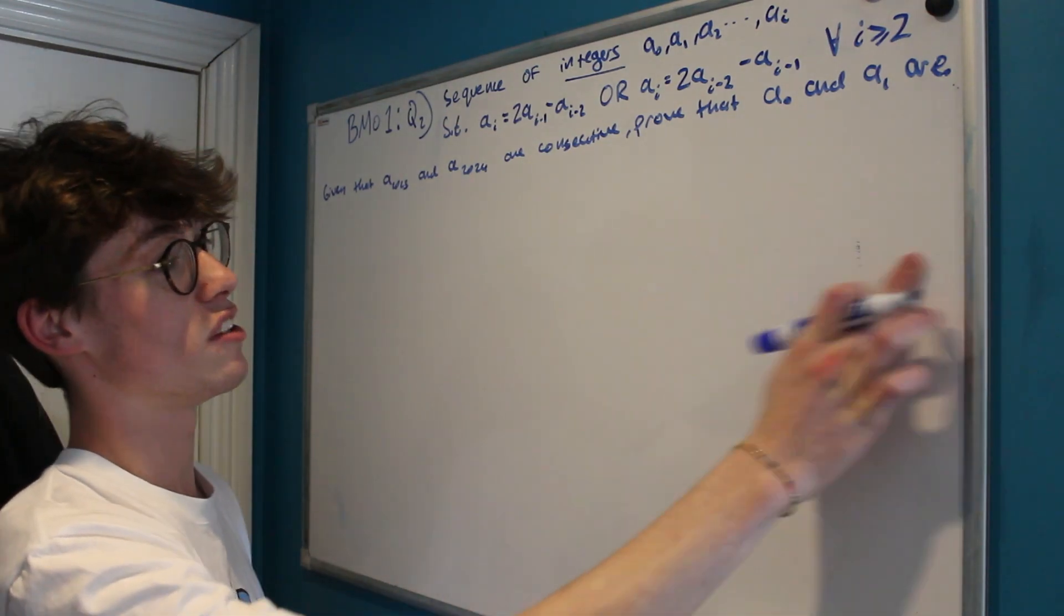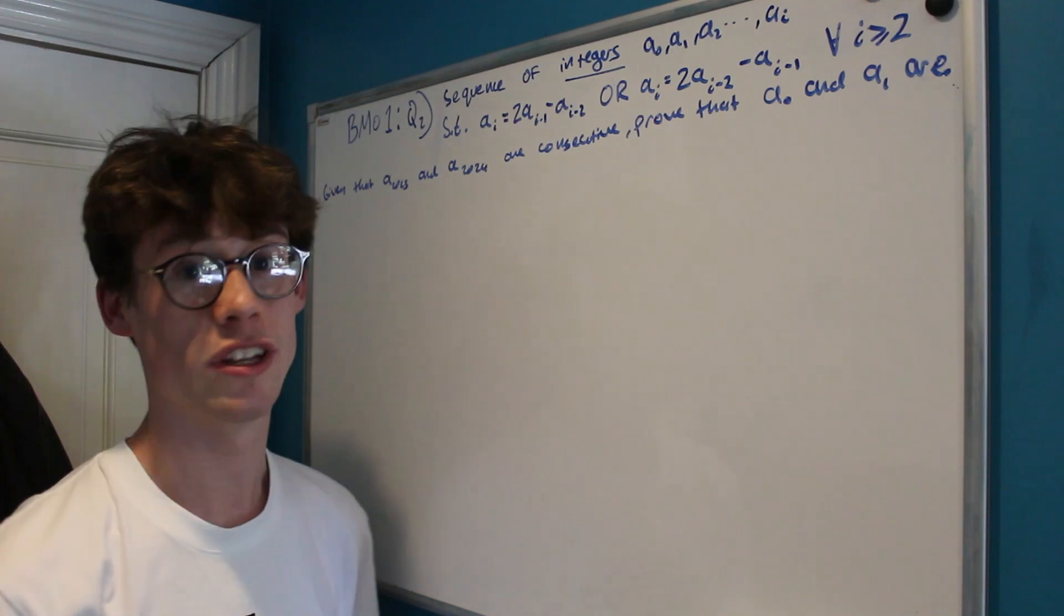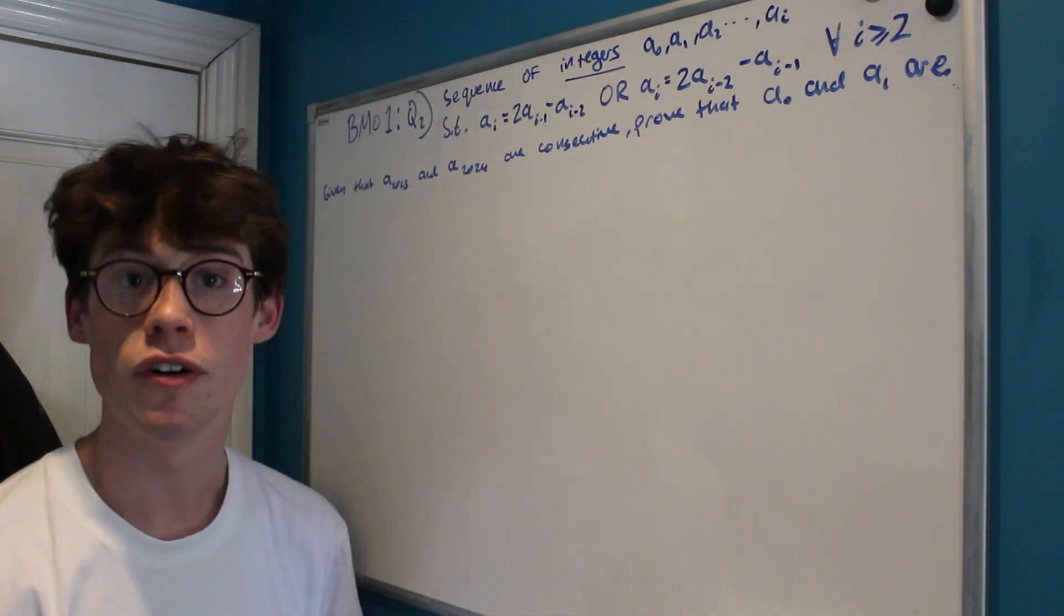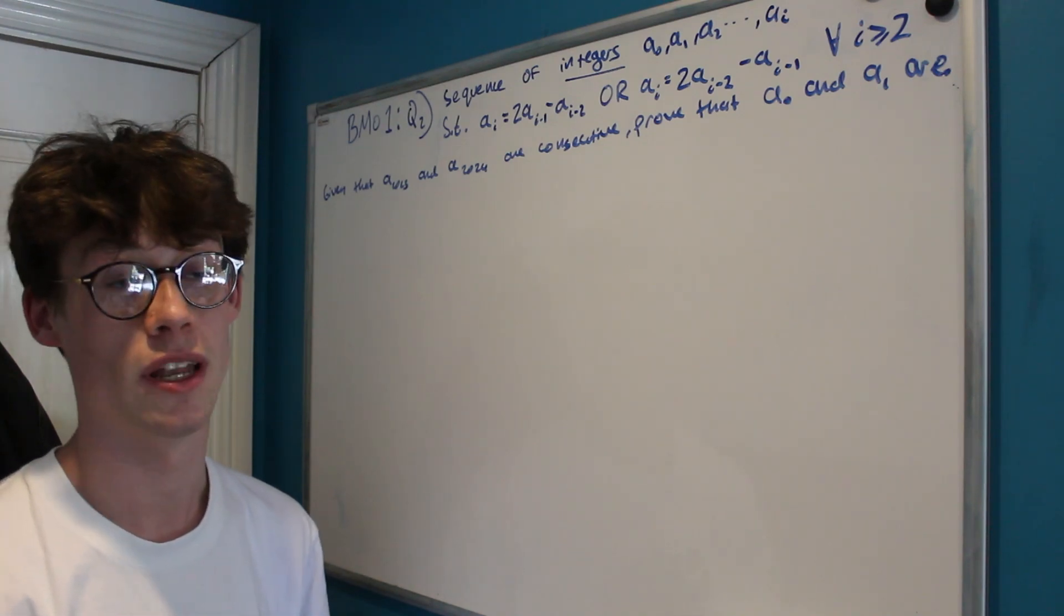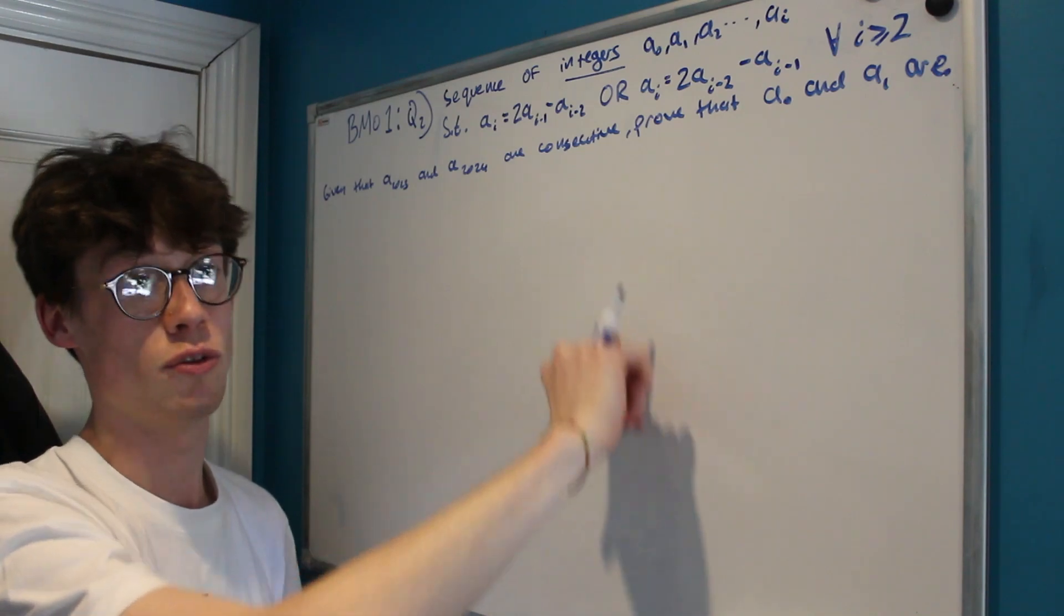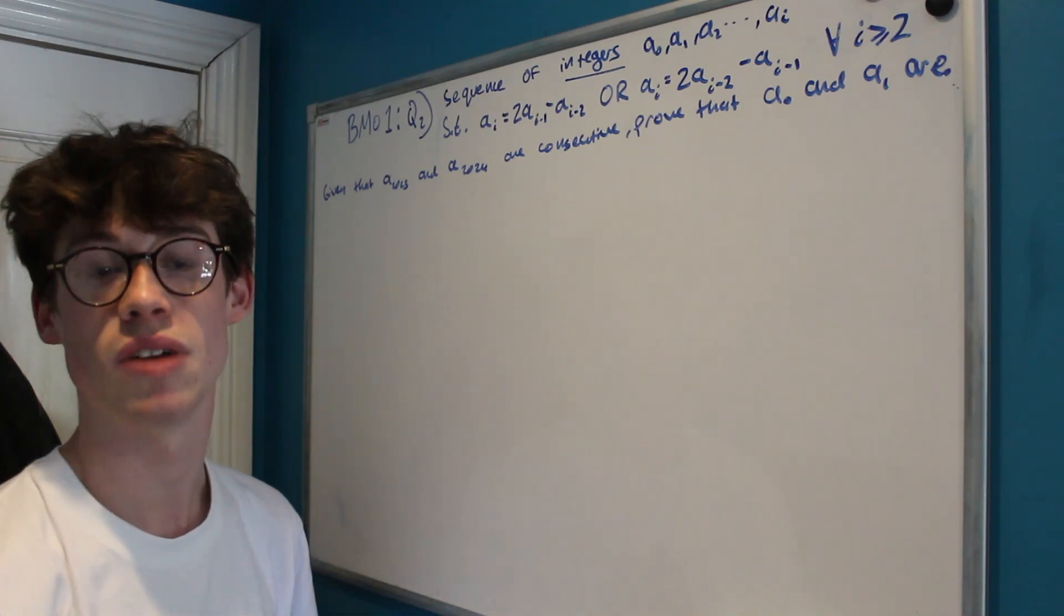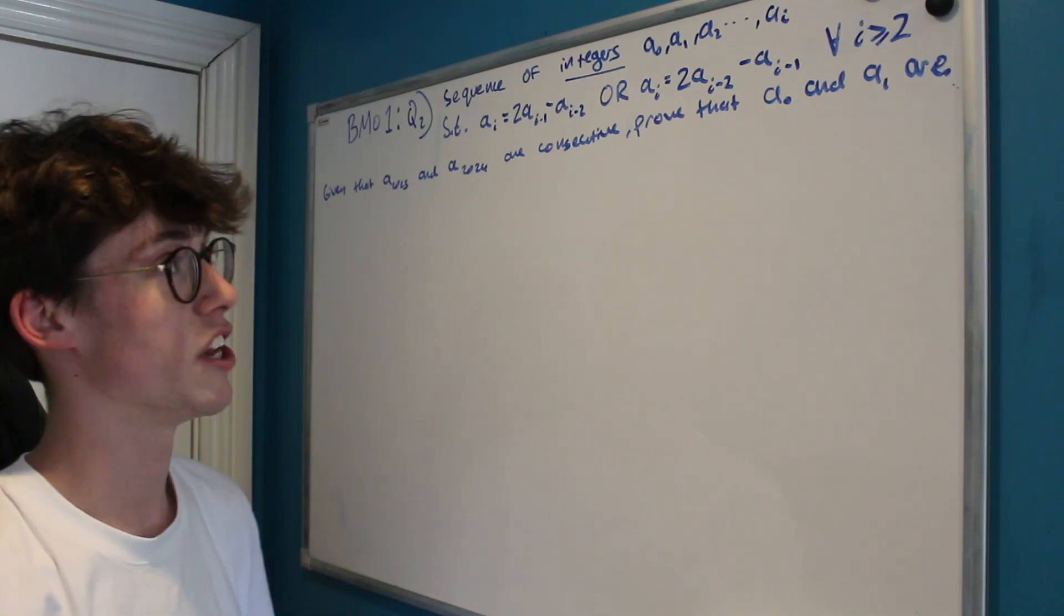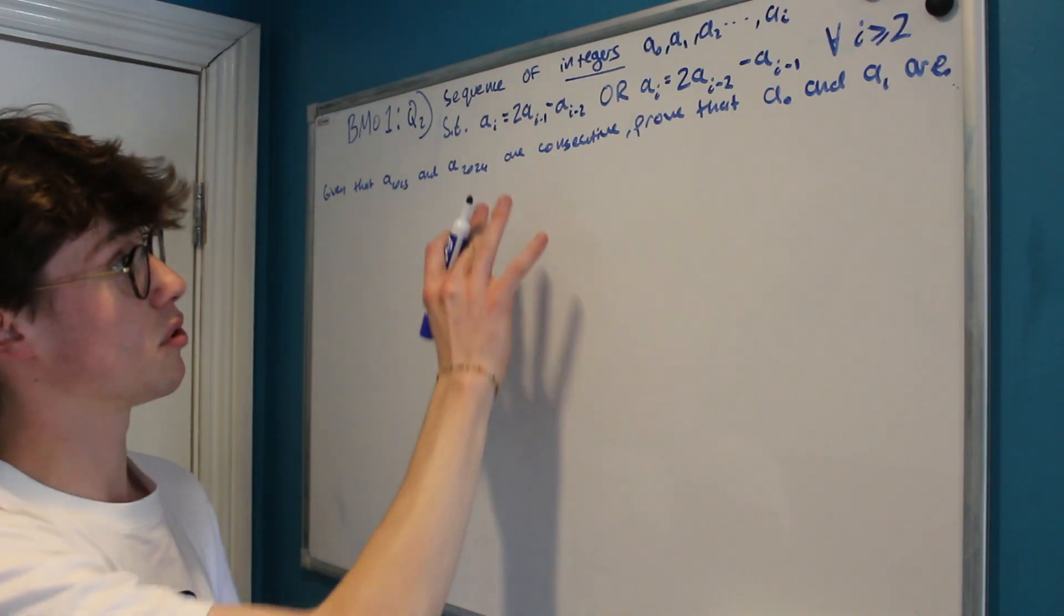Today we're going to be doing a question that's a bit different to the last two integral-based ones we've been doing. This is from the BMO1, which is the first paper of the British Mathematical Olympiad, and that's the paper that you sit that eventually if you do well enough and get through enough rounds you end up sitting the IMO, which is the huge international Olympiad that happens each year.